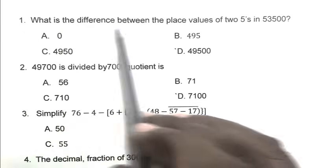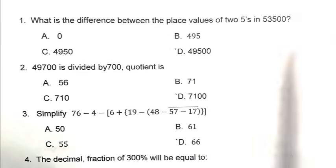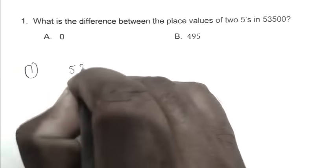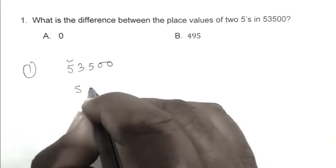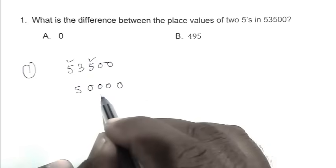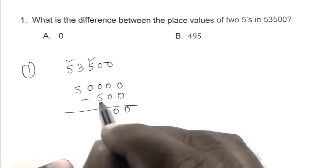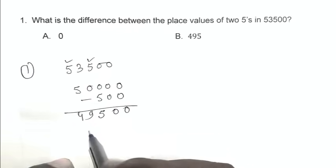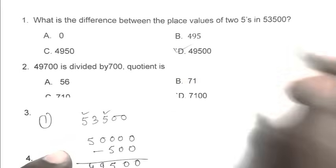Question number one: what is the difference between the place value of two fives in 53,500? The place value of this five is 50,000, and the place value of this five is 500. So the difference is 49,500. So D is the right answer.